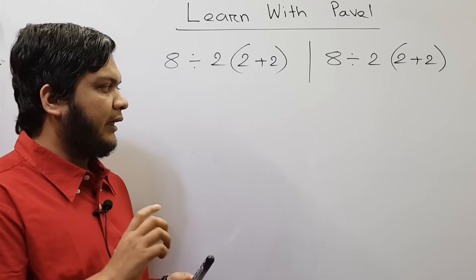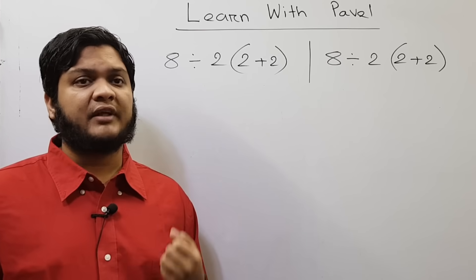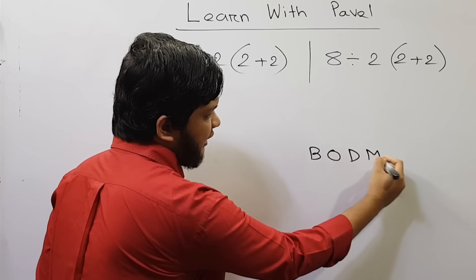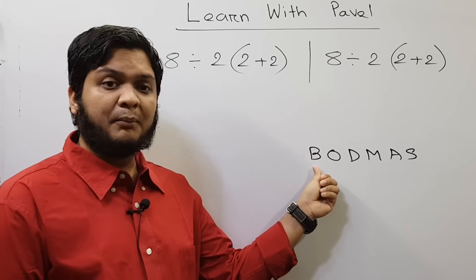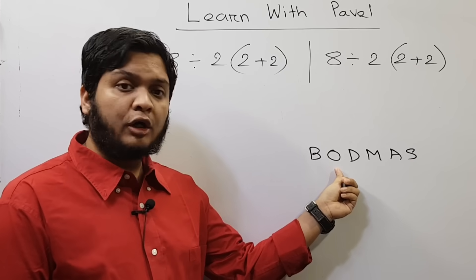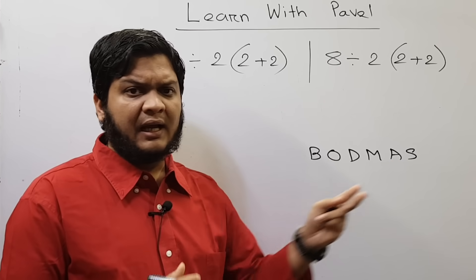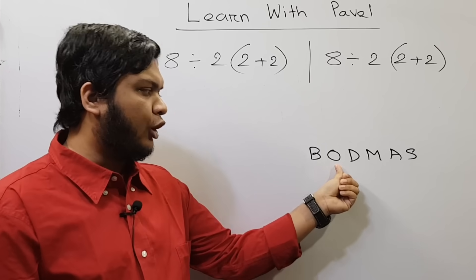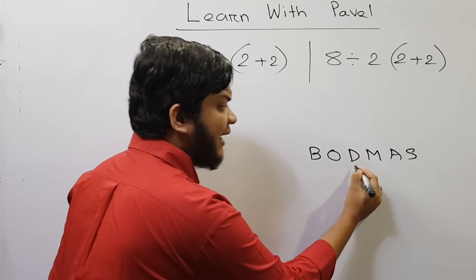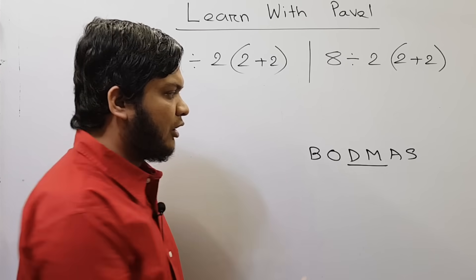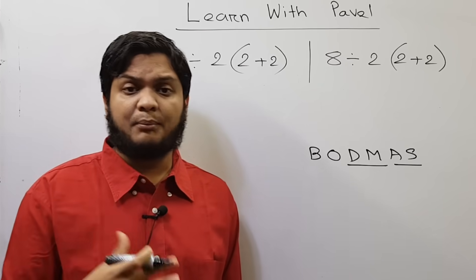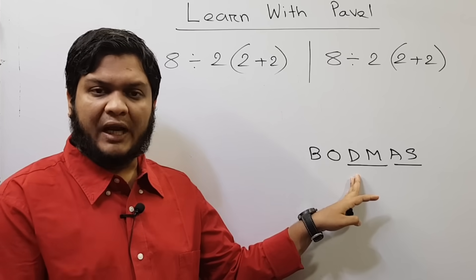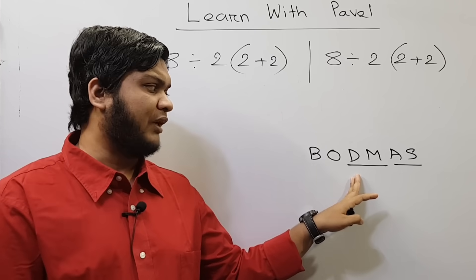In countries like Bangladesh, Pakistan, India, Australia, and UK, we learn about the acronym called BODMAS. Here B stands for Bracket, O for Order, D for Division, M for Multiplication, A for Addition, and S for Subtraction. Bracket has the maximum priority, after that Order, then Division and Multiplication — they have the same priority. Some might think that D comes before M, meaning division comes before multiplication, and that's why we carry out division first.